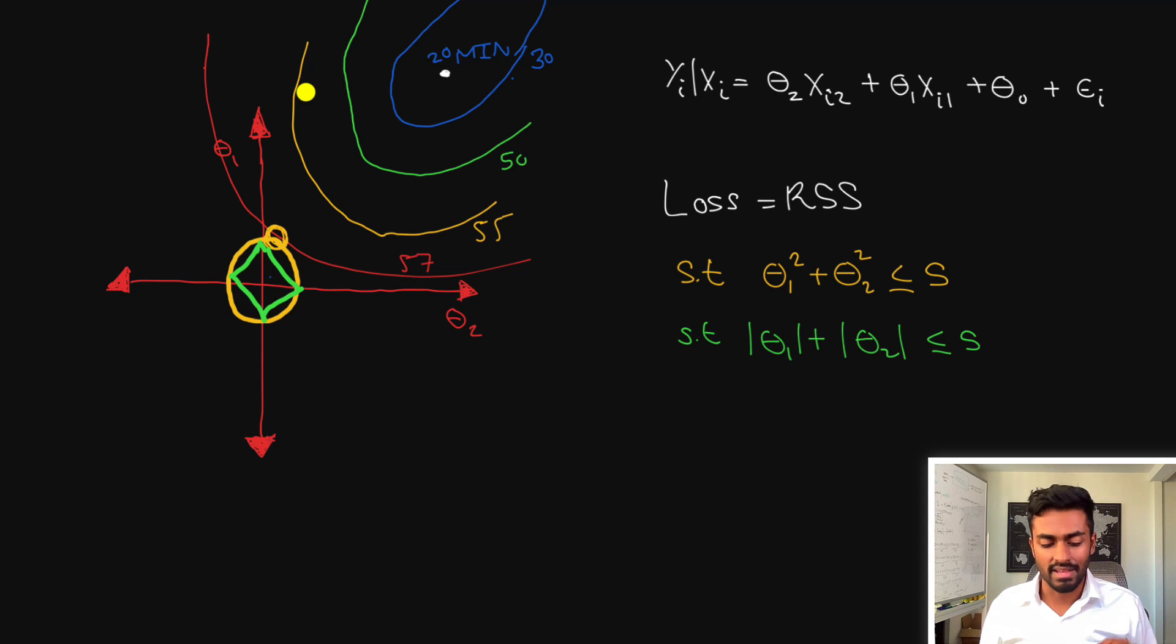One interesting property that we kind of see with lasso over ridge regression is that the values of theta 1 or theta 2 may actually absolutely become zero whereas that of ridge regression are not actually zero but they are a value that's typically very close to zero.